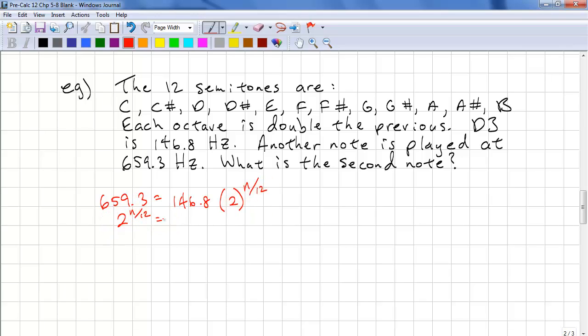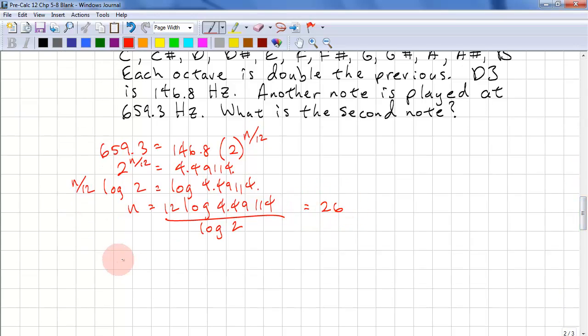2 to the power of n divided by 12 equals, we have 659.3 divided by 146.8, this is 4.49114. It's good to carry a few decimal places until your final answer. We need to take the log of both sides. So we have n over 12 log 2 equals log 4.49114. So n equals 12 times log 4.49114 divided by log 2, and this is equal to 26. It has to be an integer value because we're dealing with semitones. If you don't have an integer value, please round it off to an integer value. Now we have 26 semitones. So we have 26 divided by 12, this gives us 2 remainder 2.